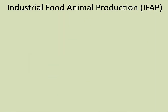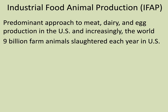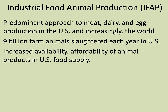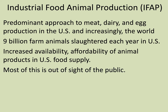IFAP is the predominant approach to meat and dairy production. Nine billion farm animals are slaughtered each year just in the U.S. — think about how many animals are produced. Some of that meat gets sold around the world. With industrialization there's been increased availability of animal products in the U.S., and that's always been the conundrum: it's available and it's cheaper, so people look at that fact without considering the downside.